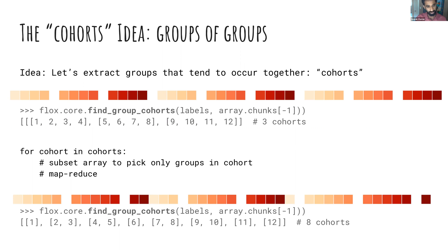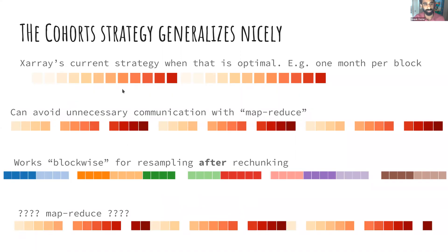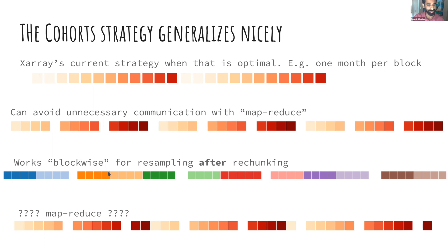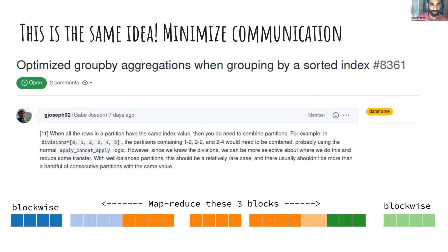There's a harder case: chunked 5 in time with 12 groups — not evenly divisible, so the pattern goes out of phase. Here it detects 8 cohorts and still splits blocks a bunch. I don't have a great solution for this — you could rechunk to 4 or 6, each might help a bit. But excluding that case, the cohorts strategy generalizes really well: for one month per block it detects 12 cohorts and combines the relevant red squares, working well; for resampling after rechunking it works blockwise.